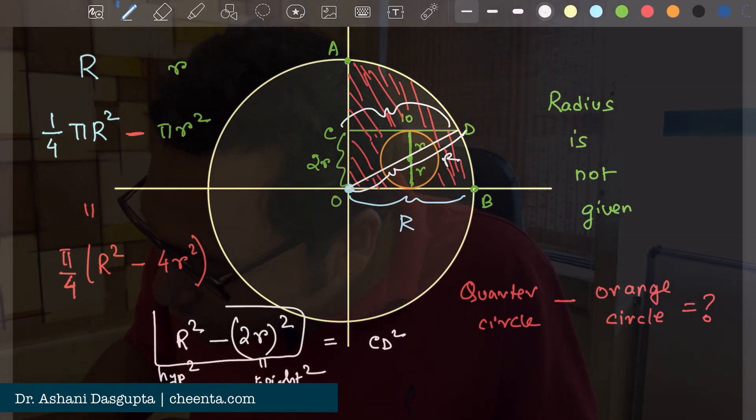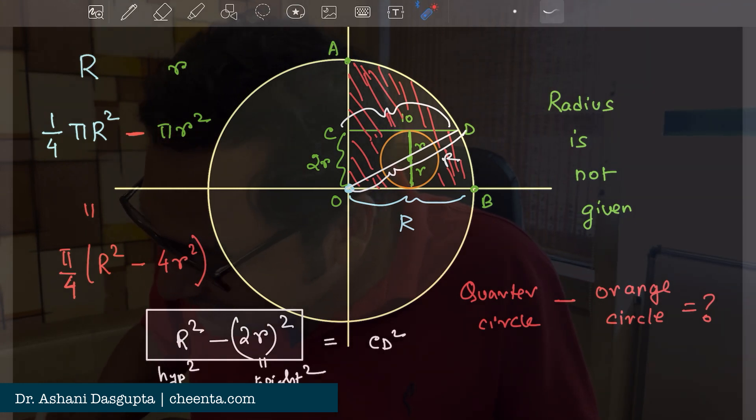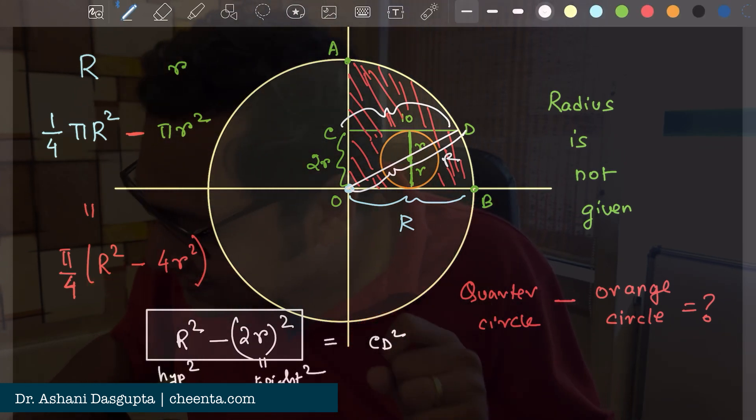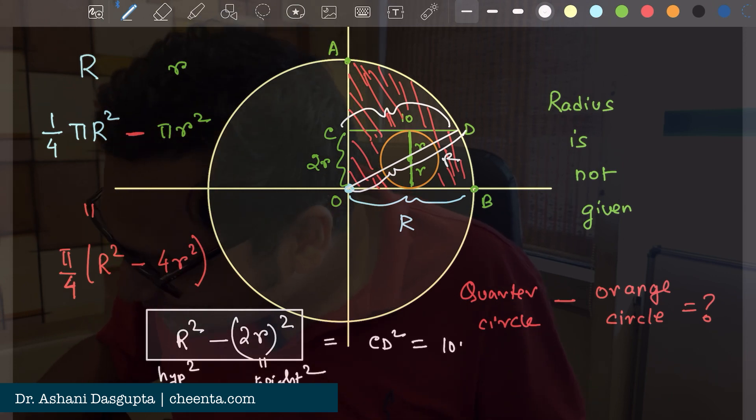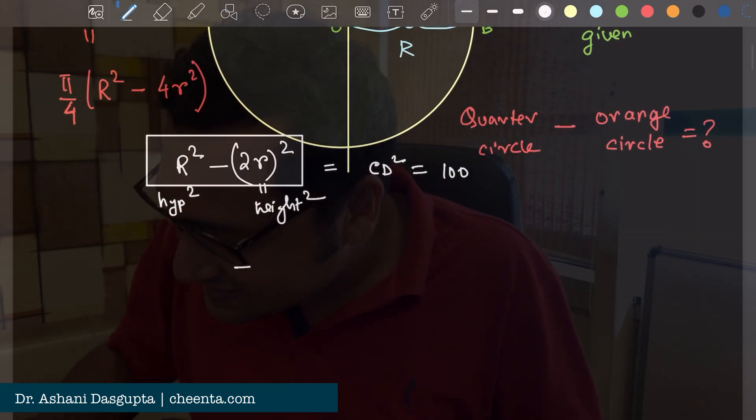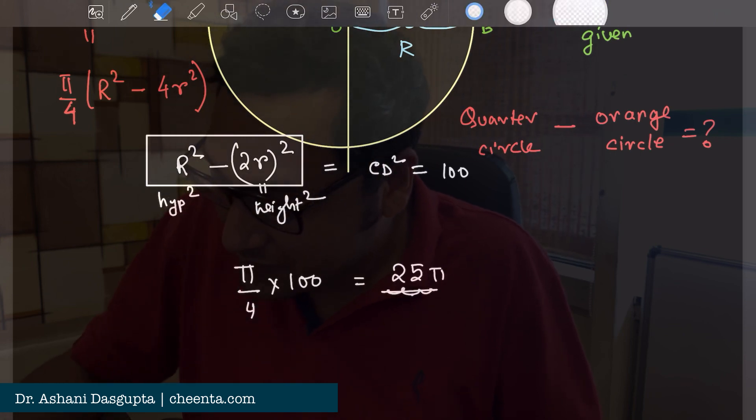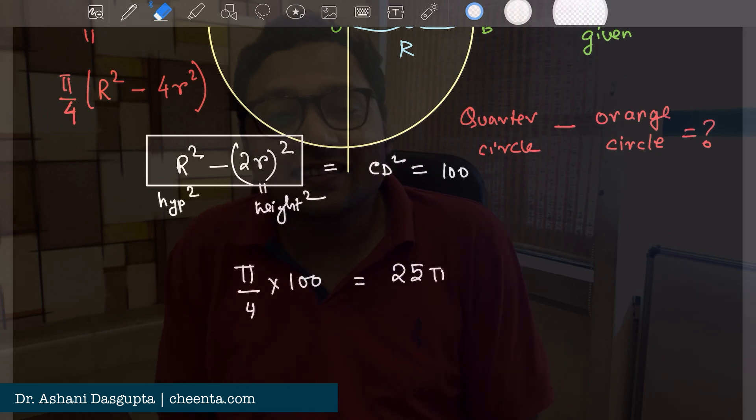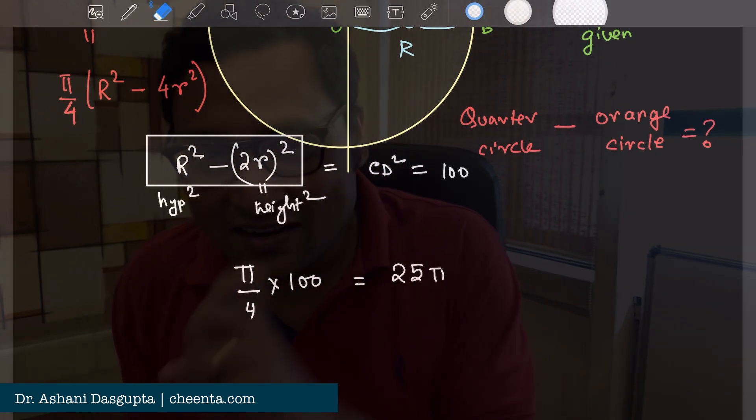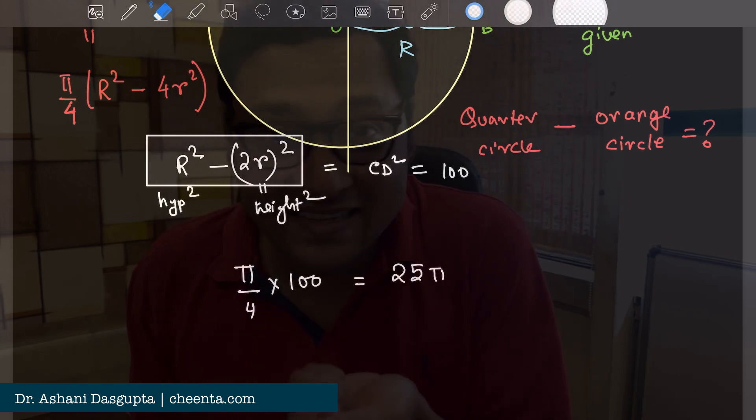But this is exactly what we want. This is capital R squared minus 2r whole squared, which is 4r squared. So capital R squared minus 4r squared is exactly CD squared, and that's exactly what we want. That is equal to 100. So the area that we needed is π/4 times 100, which is 25π. That's the fun of this problem. It seems that it was incomplete in the beginning, but when you try to investigate it, it is complete in a sense.